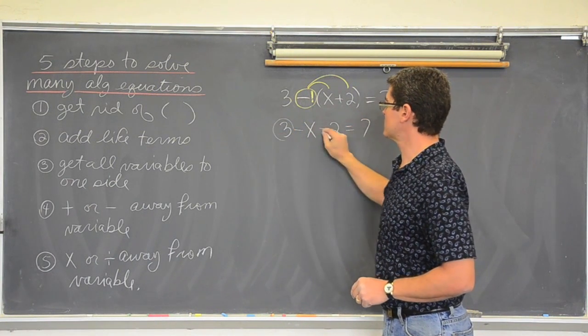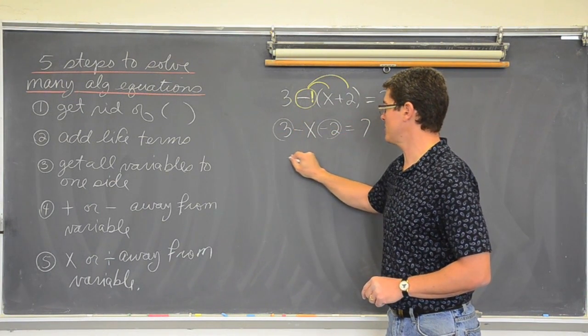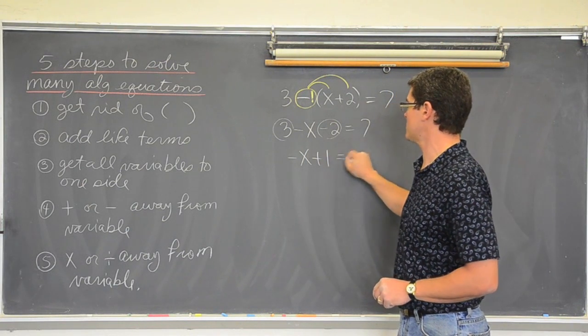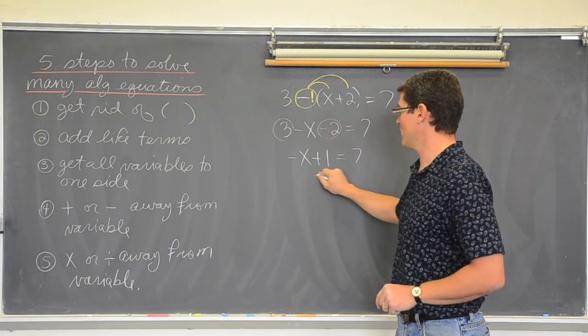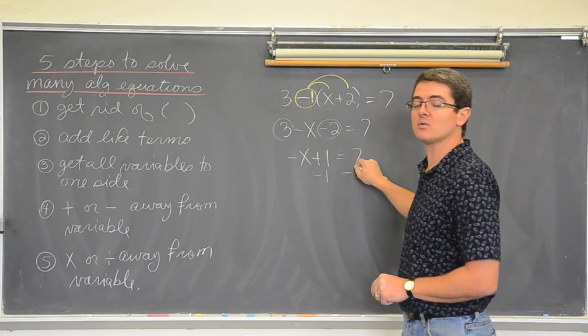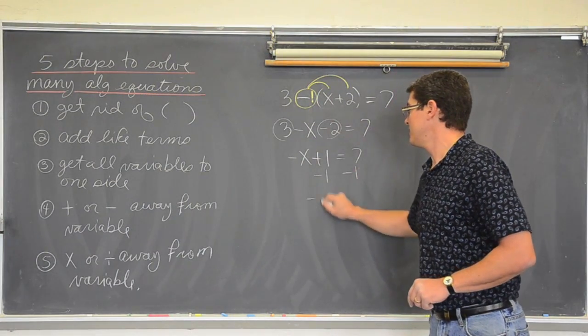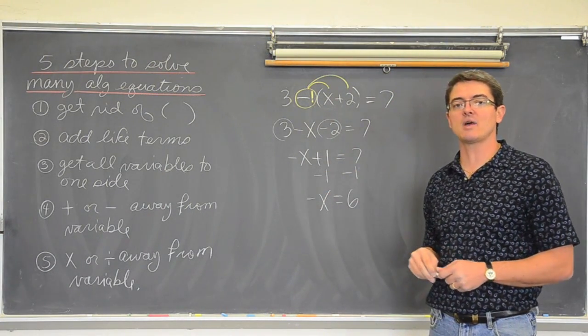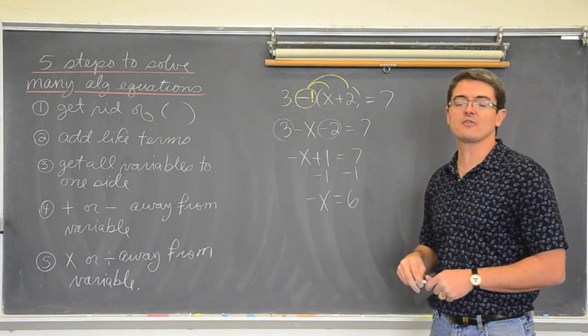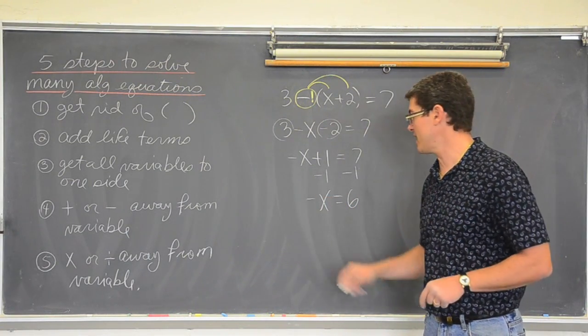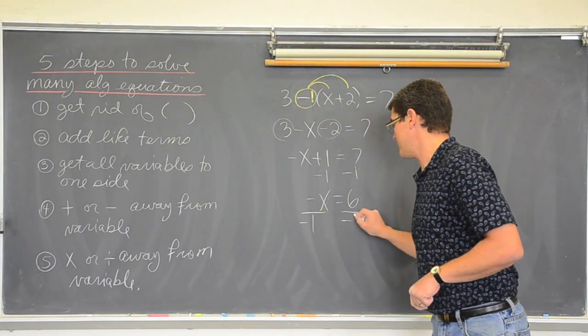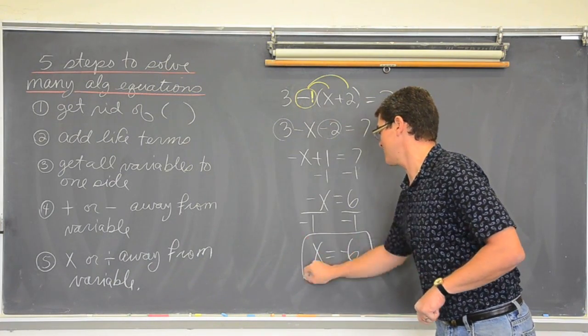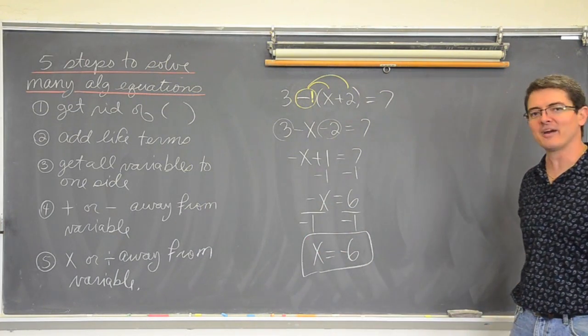Again, with the like terms, 3 minus 2 is 1. So, negative x plus 1 equals 7. Bring the 1 over. Whenever you move something over the equal sign, you want to do that with the opposite function. The opposite of addition was subtraction. We still have a minus in front of that x. That means it is not solved for yet. You get that negative 1 away by dividing. When you are all done, if you thought it was a hard question, celebrate!